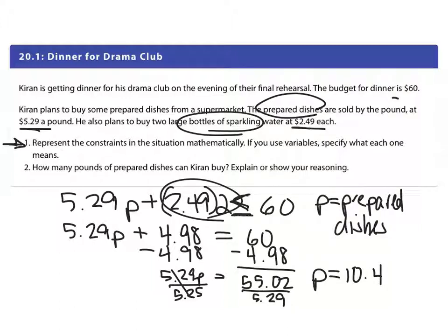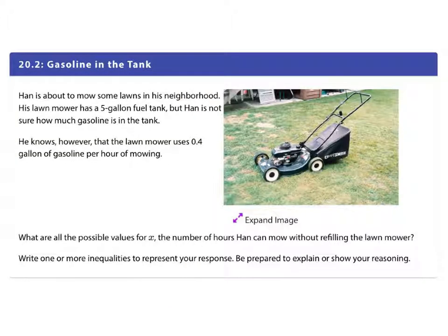So how many pounds prepared dishes? Oh, that should be less than or equal to, sorry that's a mistake on my part. It has to be 10.4 pounds. But let's think about it because exactly means how many pounds to spend exactly sixty dollars. I need to buy less than or equal to 10.4 pounds to stay within budget. So yep, there we go.